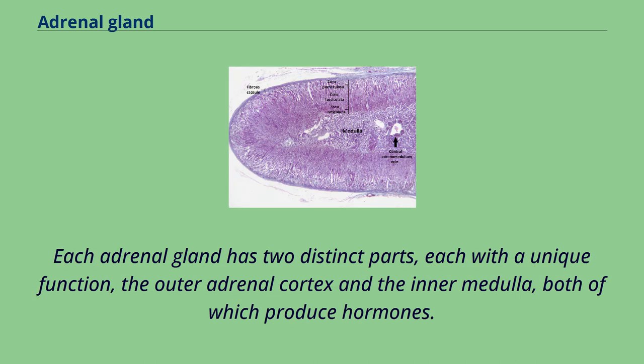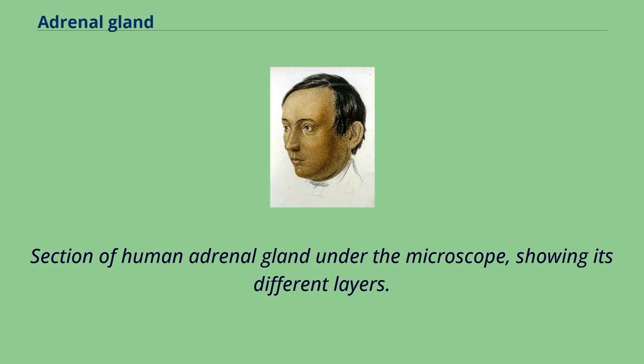Each adrenal gland has two distinct parts, each with a unique function: the outer adrenal cortex and the inner medulla, both of which produce hormones.